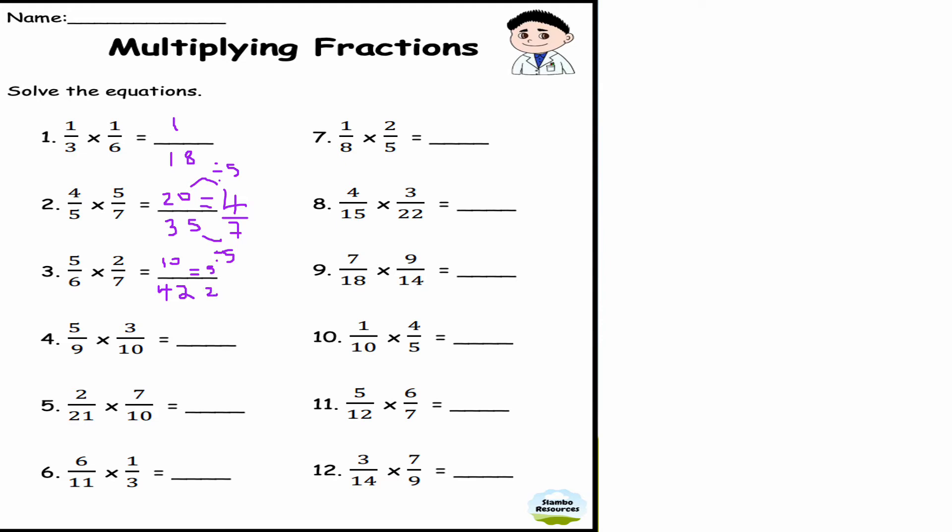This is question number four: 5/9 times 3/10. Well, 5 times 3 is 15, 9 times 10 is 90. I can actually divide top and bottom by 15, so I get 1/6.